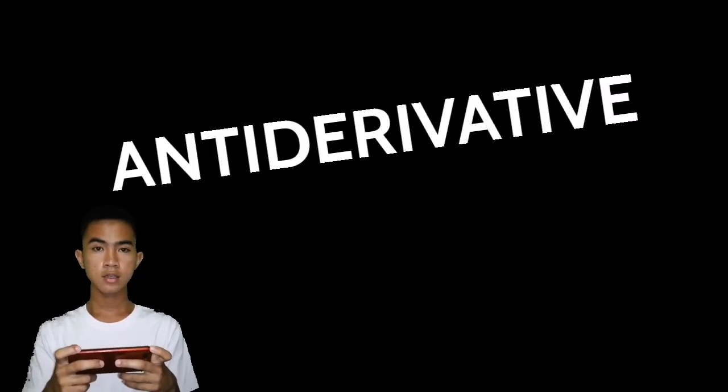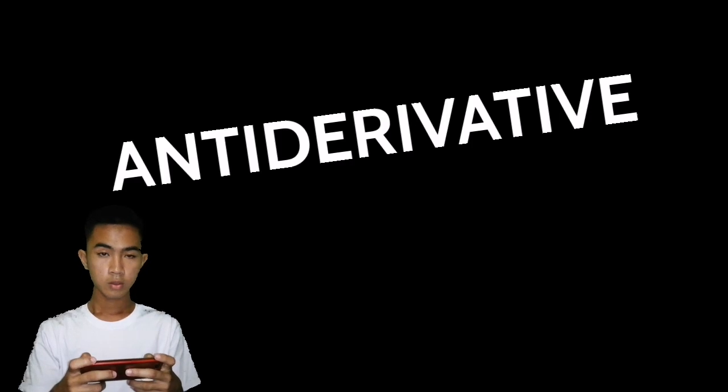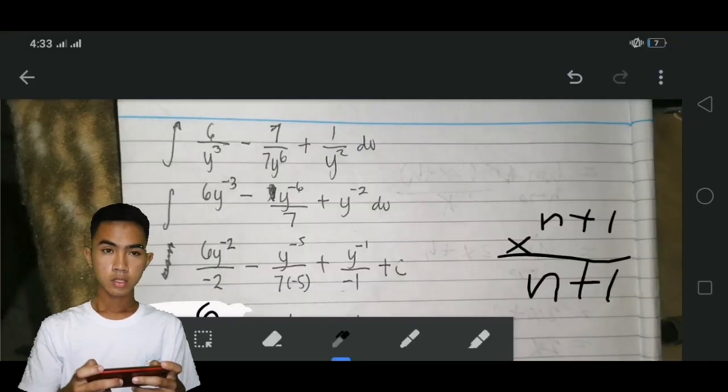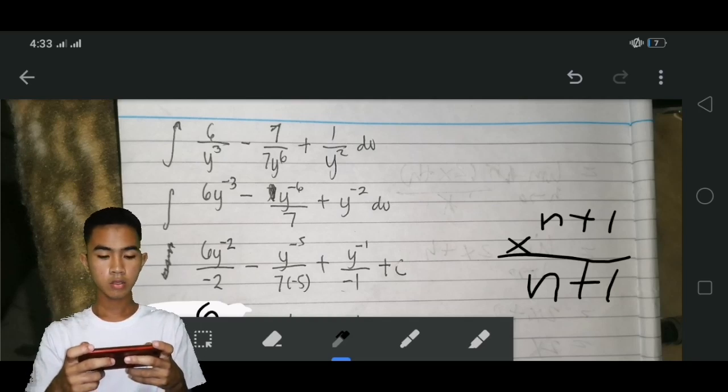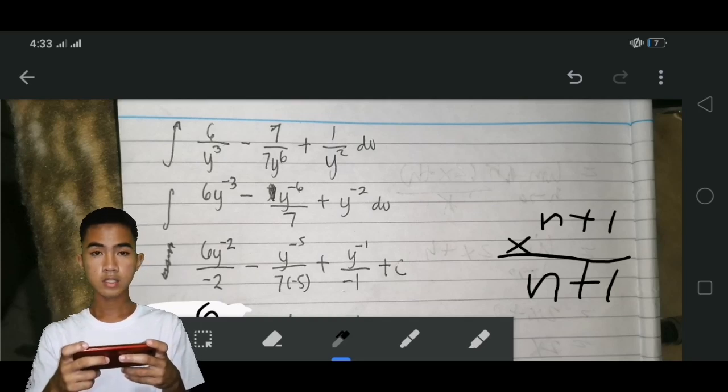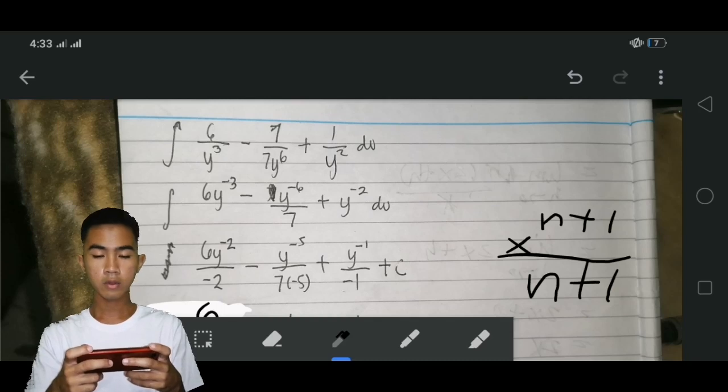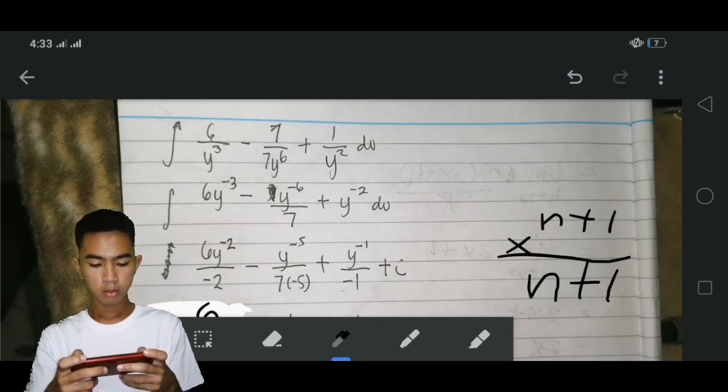To discuss the anti-derivative. I have an equation of integral of 6 over y cubed minus 7 over 7y to the 6 plus 1 over y squared dy.